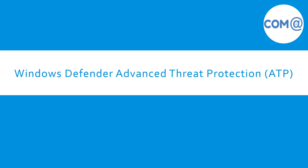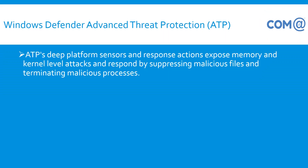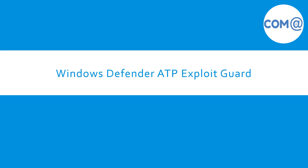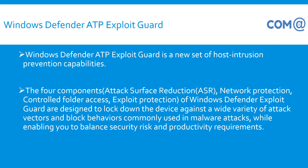Another feature is Windows Defender Advanced Threat Protection. In earlier versions we had Windows Defender functionality, but now it has more features added. It can expose memory viruses as well as kernel-level attacks. This advanced threat protection is further improved with Windows Defender ATP Exploit Guard, which is added with four important components: network protection, controlled folder access, exploit protection, and attack surface reduction.